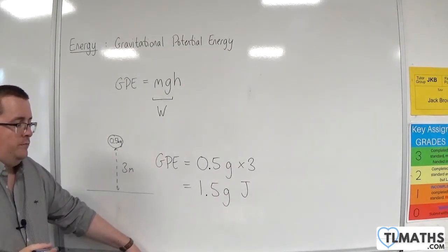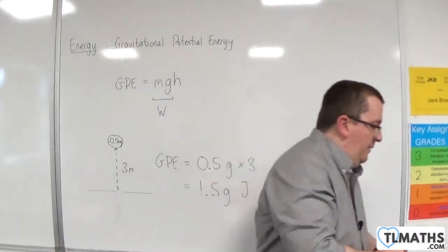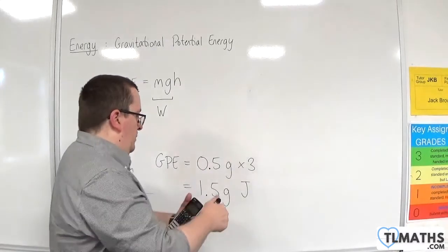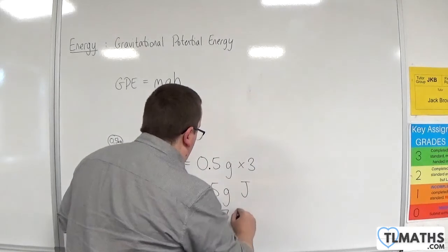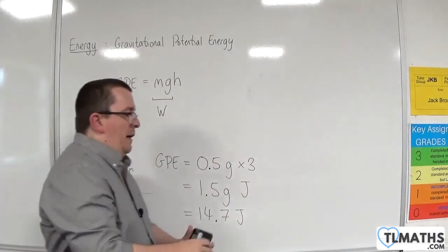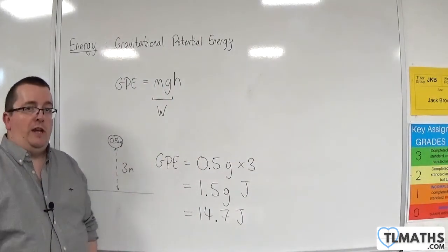Now, you could substitute in g for 9.8. So, 1.5 times 9.8 would be 14.7. So, this would be 14.7 joules. And that would be your gravitational potential energy. So, this is the formula to learn, mgh.